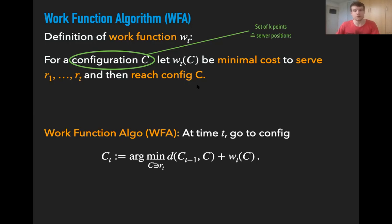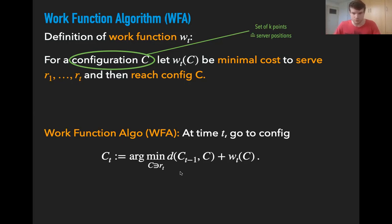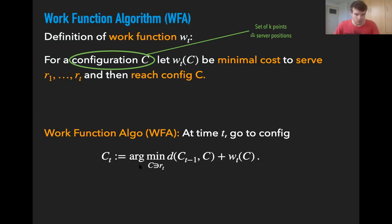The algorithm which achieves most of those bounds — and in fact the algorithm conjectured to solve the k-server conjecture — is the work function algorithm. It is conjectured that this algorithm is k-competitive on any metric space. The work function is a function defined on configurations, where a configuration is simply a set of k points of the metric space. For configuration c, we define w_t(c) to be the minimal cost to serve the first t requests of the request sequence and then reach configuration c. So w_t(c) is the amount of work that has to be done in order to be in configuration c at time t.